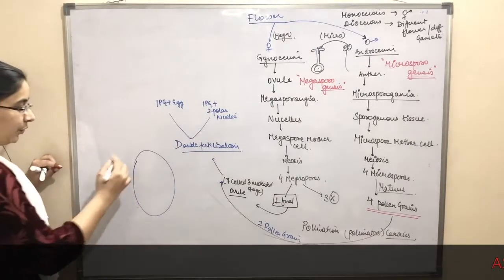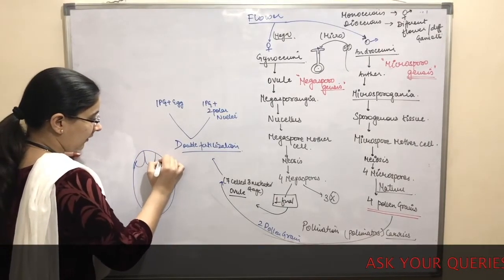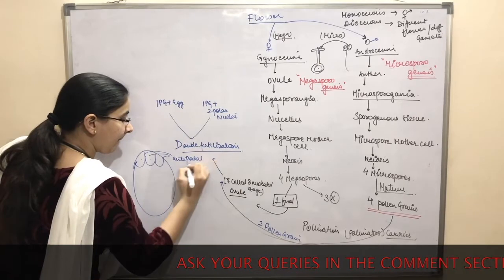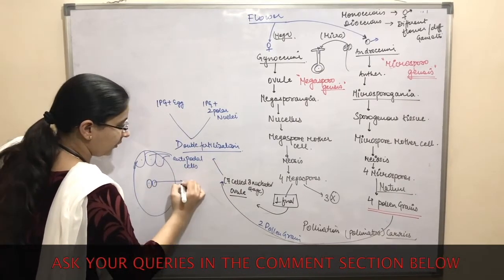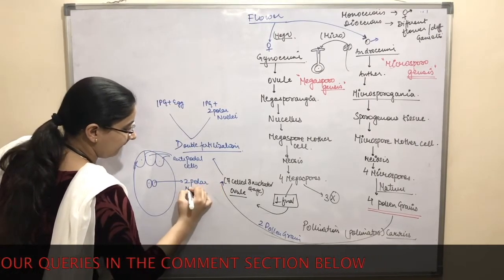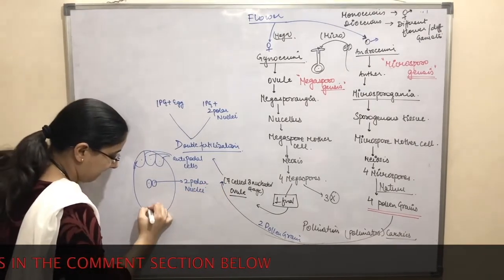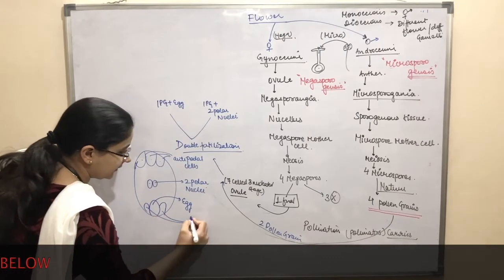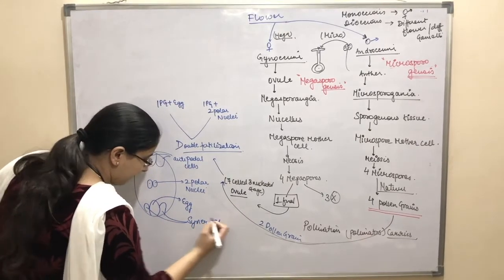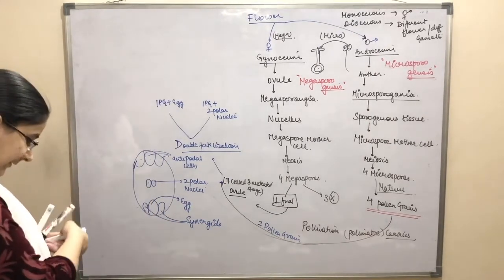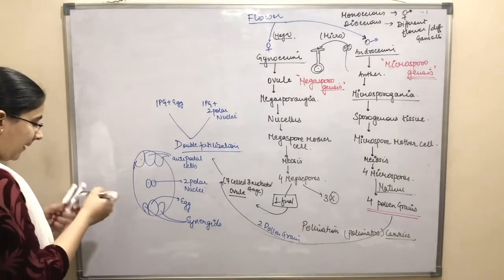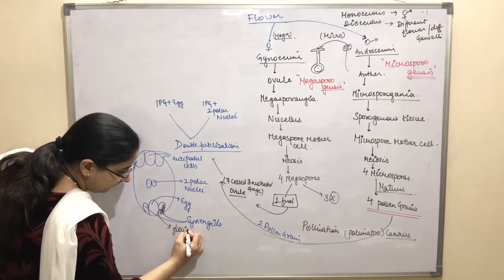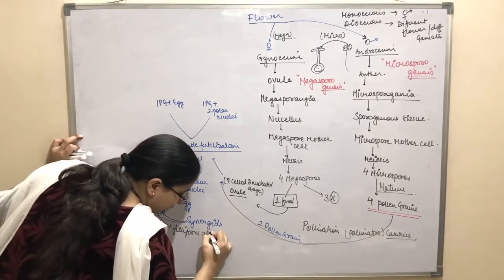This is my ovule. These are the three antipodal cells, two polar nuclei. The middle one is egg, and the adjacent are called as synergids. Synergids have filiform apparatus.